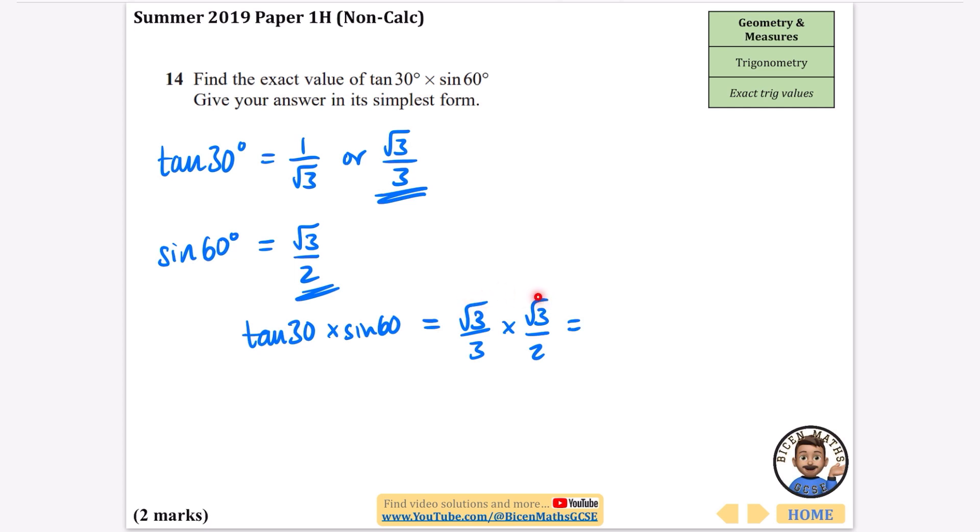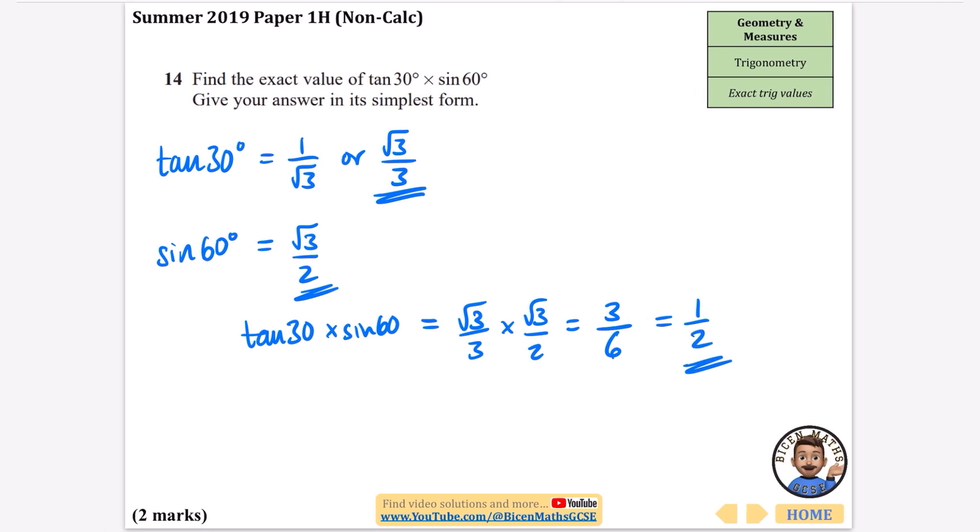Now root three times root three, that's root nine or just three. And three times two is six. So I get three over six, which just simplifies to a half. So you get half and you get one mark for getting just one of these equal to each other.